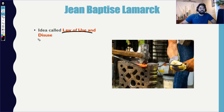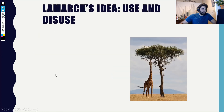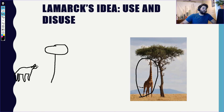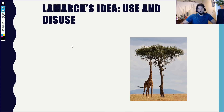His idea was called the law of use and disuse — if you use a body part, it gets stronger; if you don't use it, it deteriorates. He explained this with giraffes: the original giraffe was like a horse, but it was placed in an environment where food was only in high trees. So it would stretch its neck, and over time that baby would have a longer neck, and eventually giraffes would have long enough necks to eat leaves from the trees. That's his explanation, and yes, it is wrong — but it was the best explanation we had for a little while.